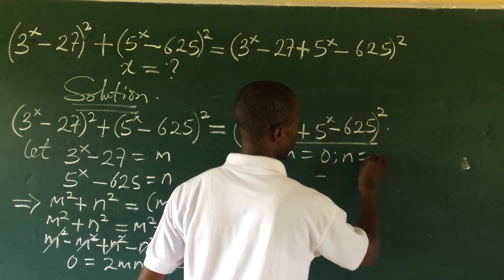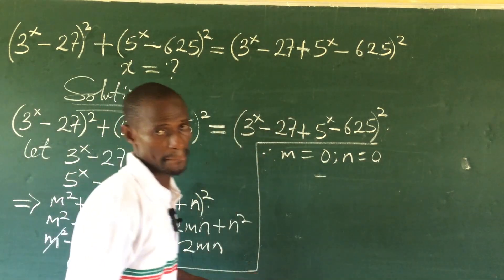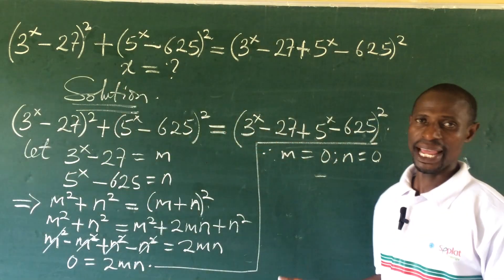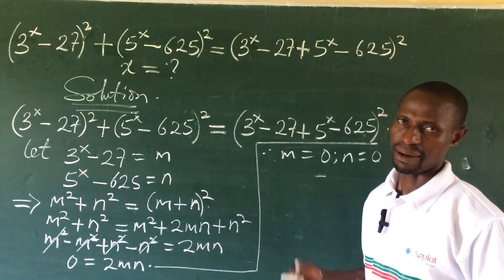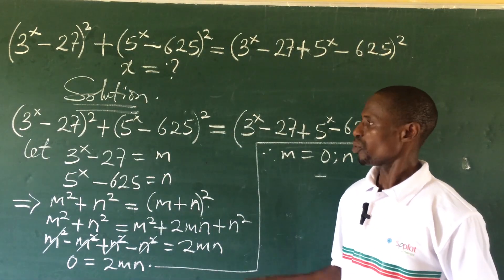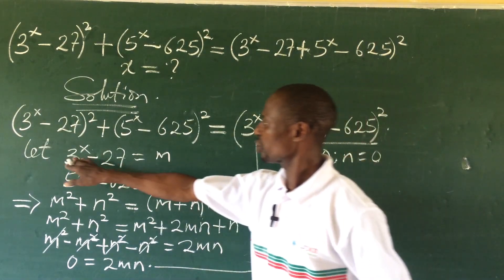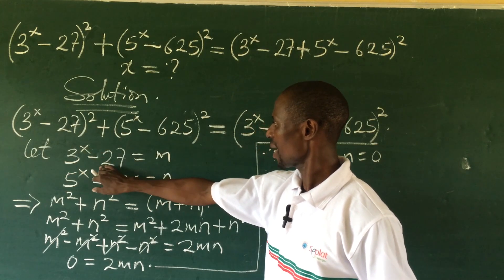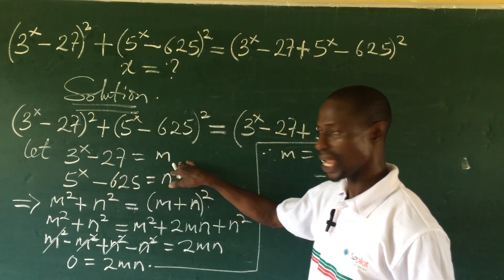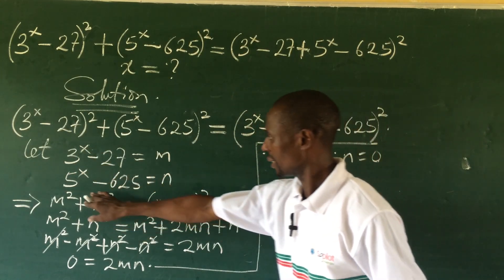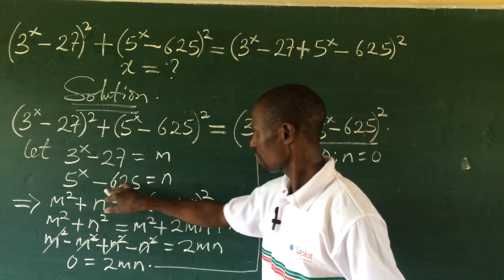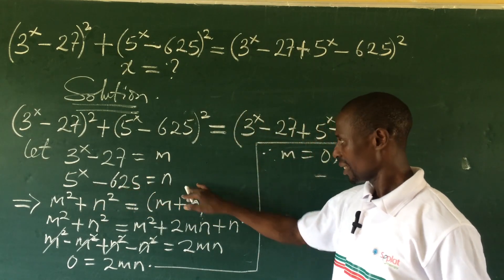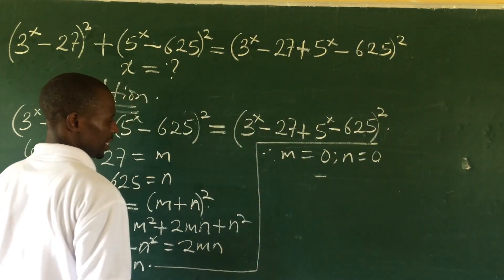Recall that at the beginning we don't have n and m in our original system. So we go back to where we said 3^x − 27 = m and 5^x − 625 = n, and now solve for x using those substitutions.